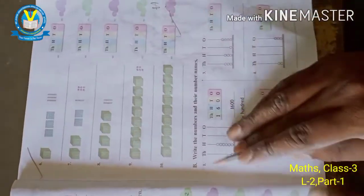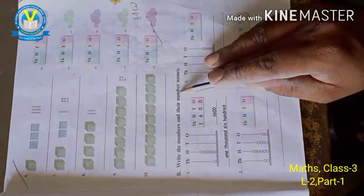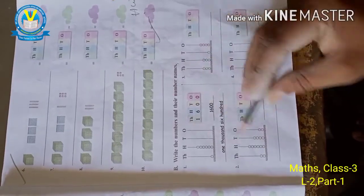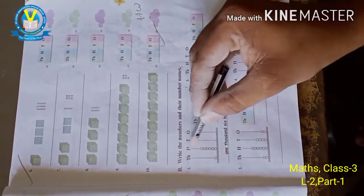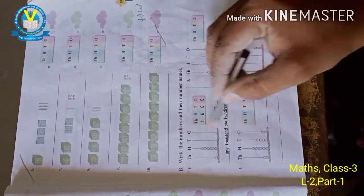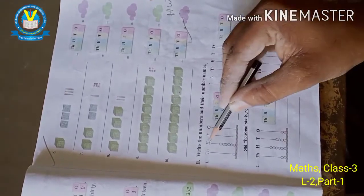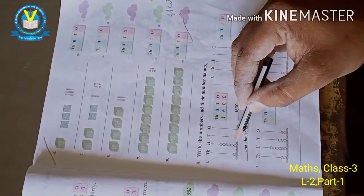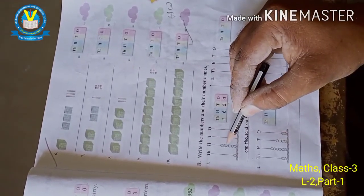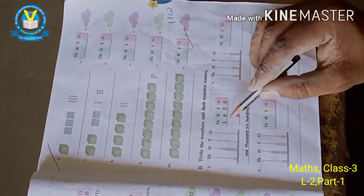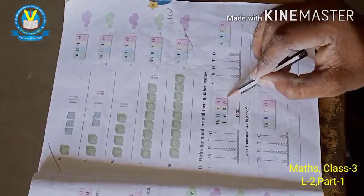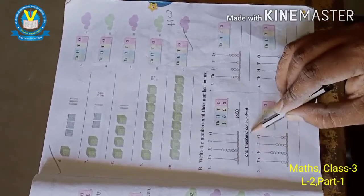The remaining questions 2 to 10 are homework. Next, read the abacus. The ones place has no beads: 0. The tens place has no beads: 0. The hundreds place has 6 beads: 600. The thousands place has 1 bead: 1,000. The number is 1,600.